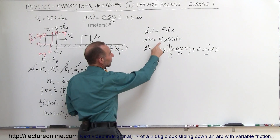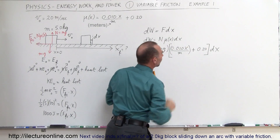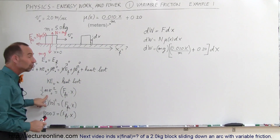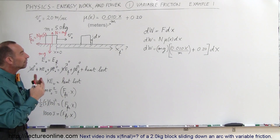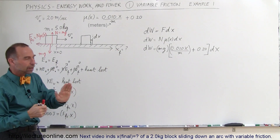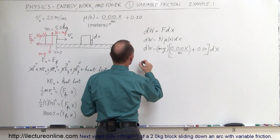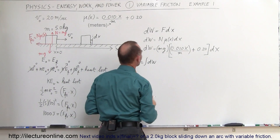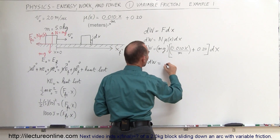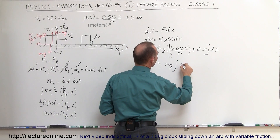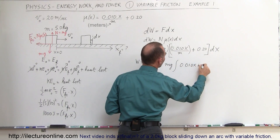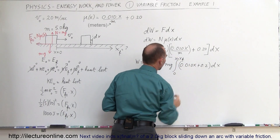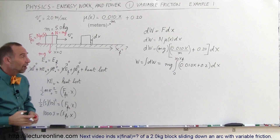What we've done is replace N by mg, and mu is as defined. Now in order to find the work done to move the block the entire distance — which equals the initial kinetic energy of 1000 joules — we can figure out how far we've traveled before the block comes to a complete stop. The total work done is the integral of all the small dws added up. We can move mg outside the integral sign, giving us mg times the integral of (0.010x + 0.2) dx, integrated from 0 to x final, which is what we're trying to find.